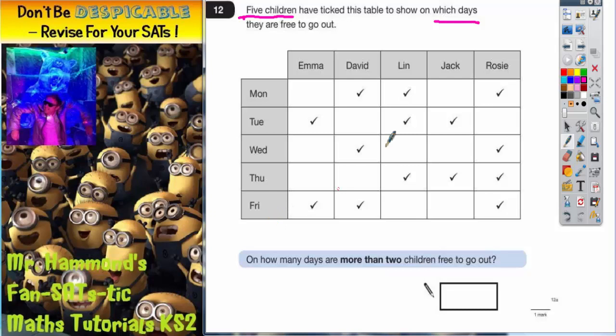If a box is being ticked that means that child was free to go out on that day. So Lynn for example was free to go out on Monday, Tuesday and Thursday but she could not go out on Wednesday or Friday because there's no tick. If you read across a row, for example Thursday, you can see that Emma and David could not go out on Thursday but Lynn, Jack and Rosie could because they are ticks.